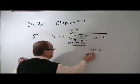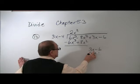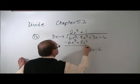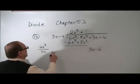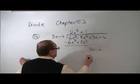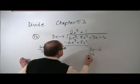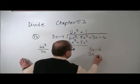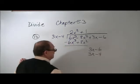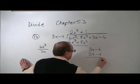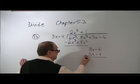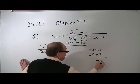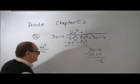So we bring down our 3X minus 6. Now 3X goes into there 3X times. So that's going to be a plus 1. And 3X times 1 is 3X. Negative 4 times 1 is a negative 4. And again, we're going to change signs. This cancels out and we have a negative 2 as a remainder.